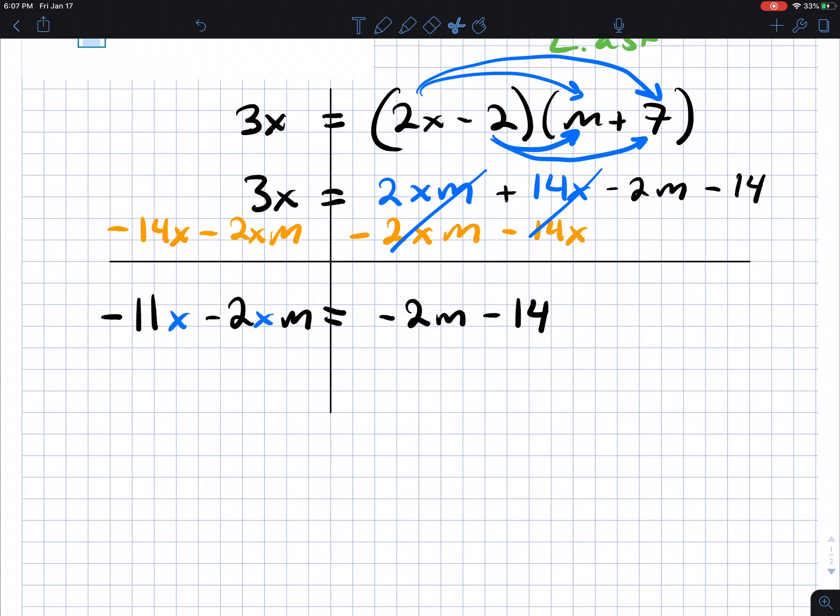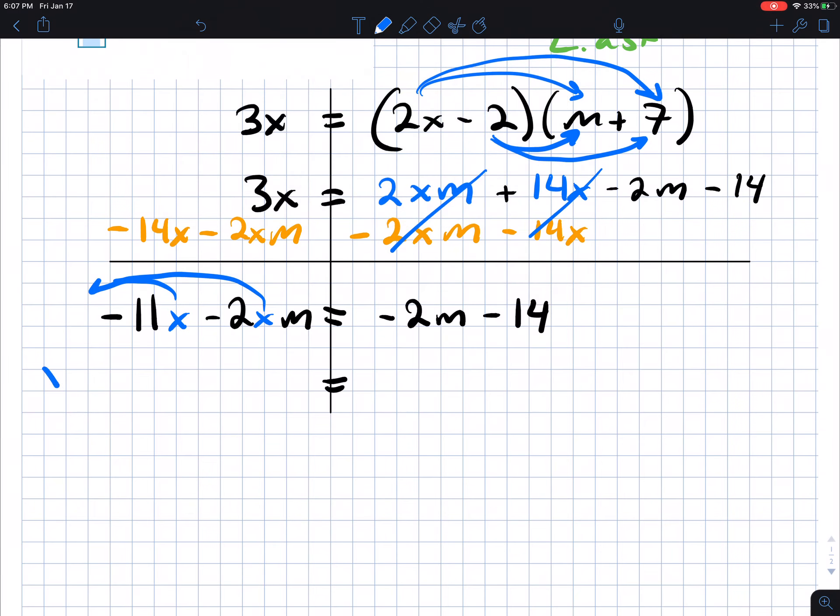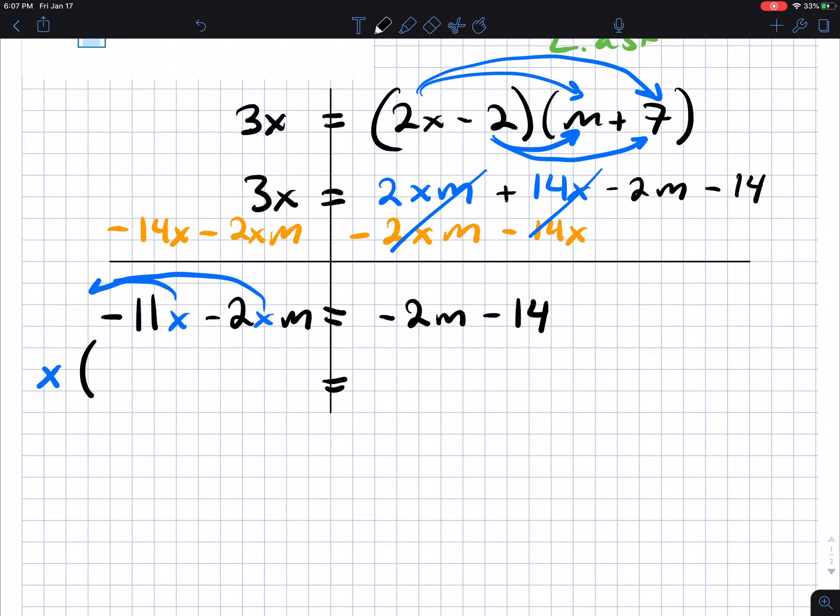We want to use a technique called factor. Factor is like reverse distribute. So it's almost kind of like they merge. So we want to factor out the x's. So if we factor out x, we will be left with negative 11 minus 2m.